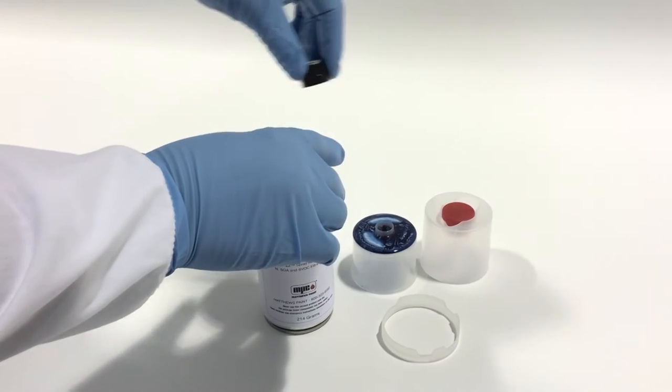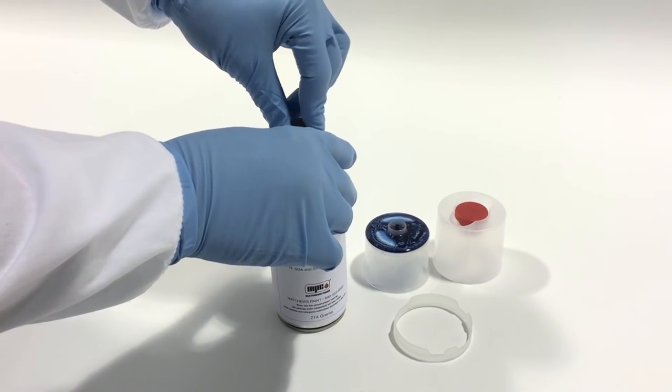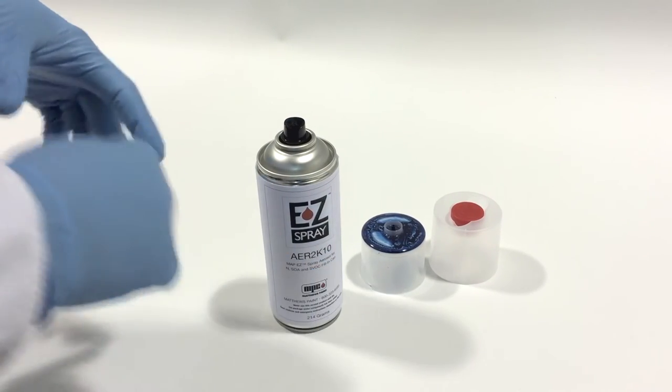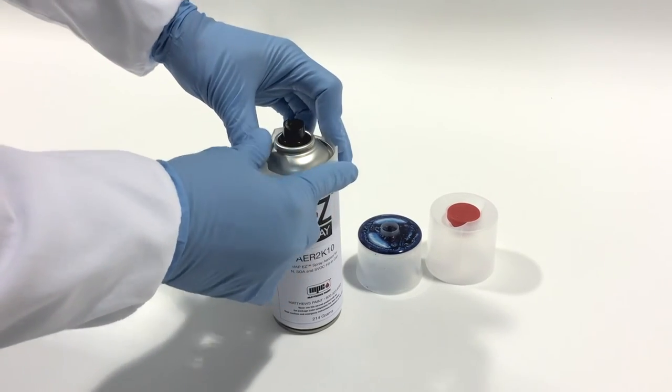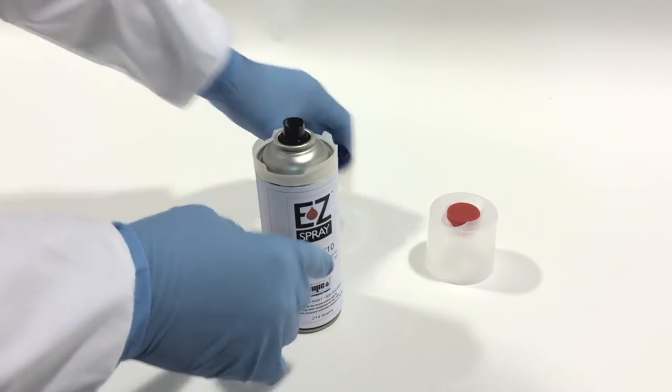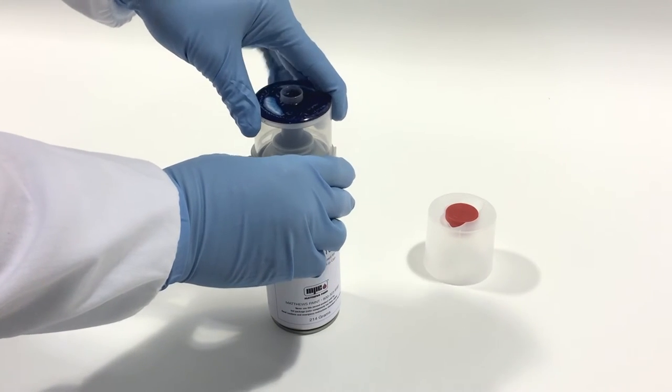Now facing the spray nozzle away from you, replace the spray nozzle. Snap the plastic adapter ring on top of the filled aerosol can, and place the plastic filling cup with the visible color on the top of the aerosol can.